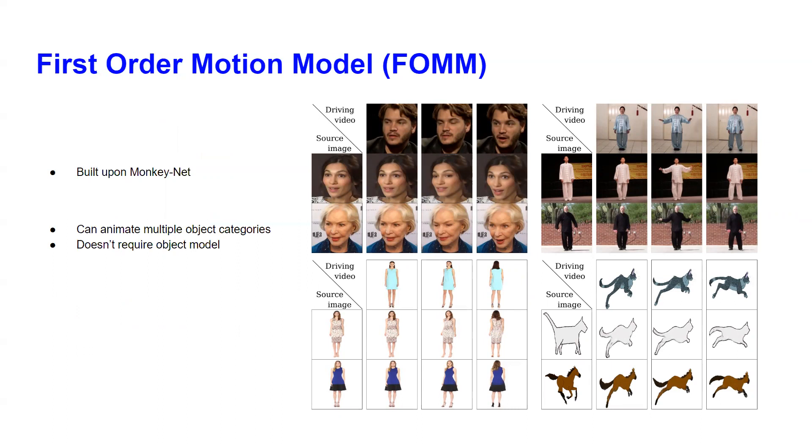These are some examples on different datasets using first-order motion model. As we can see, we have a frame from the driving media and source image, and applying first-order motion model results in high quality image reconstruction. At the same time, we can apply the same model to different object instances.